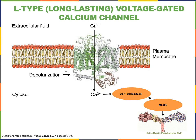When depolarization triggers opening of the L-type voltage-gated calcium channel, calcium rushes from the extracellular fluid into the cytosol of the smooth muscle cell. Calcium then binds to calmodulin, activating myosin light chain kinase to phosphorylate myosin light chain, leading to activation of myosin and enabling cross-bridge formation. Following cross-bridge formation, we have the working stroke, then cross-bridge detachment, and then cocking of the myosin head — repeating the four steps of the power stroke cycle in the sliding filament theory.